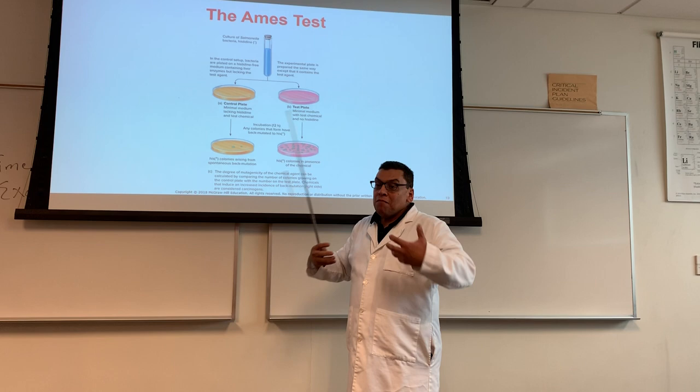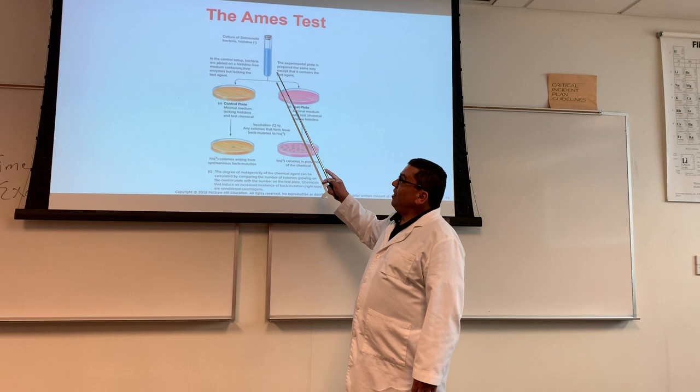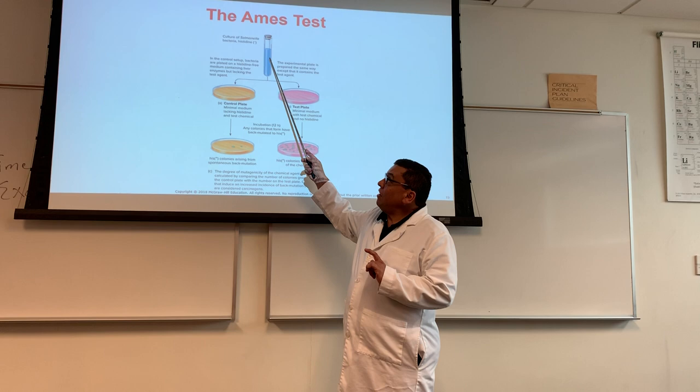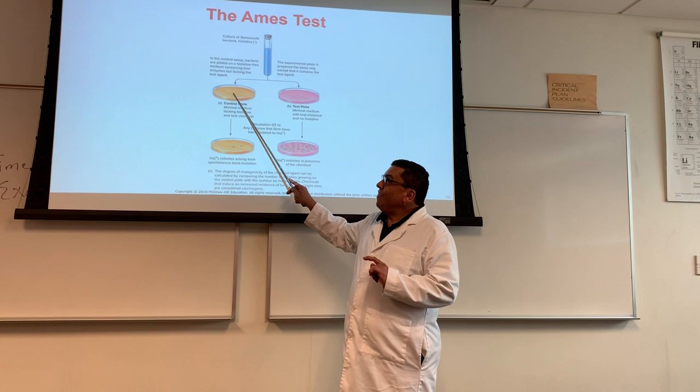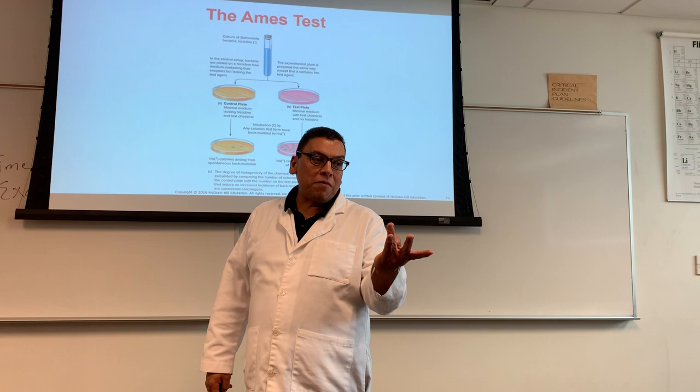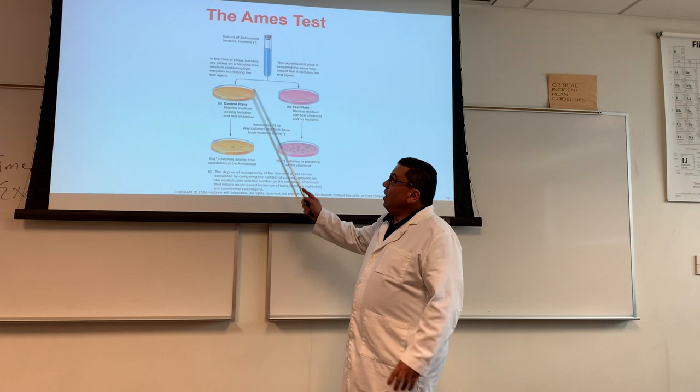For the bacteria to survive, you must give it histidine — but we're not giving it any. It is growing in the culture tube initially, which most likely has histidine in it because you want to grow it. You're going to take an inoculum from there and put it on this plate. The inoculum on the plate will die, because it doesn't have the ability to make its own histidine and you're not providing it — so it won't be able to make proteins.